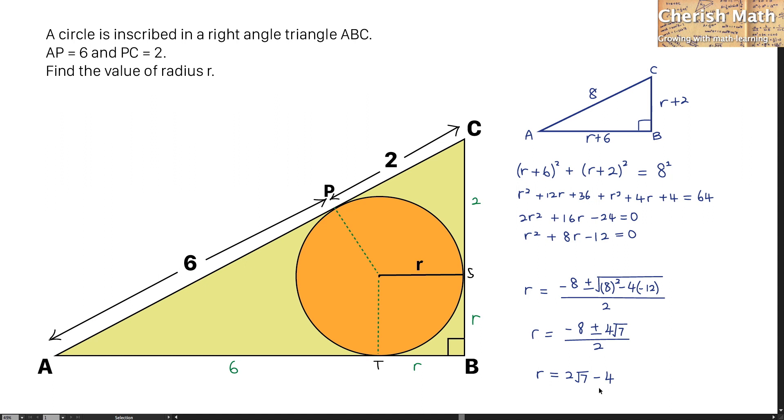And it is a positive value. I can only pick the positive sign here to solve the problem, simply because the value of radius R doesn't exist in the negative.